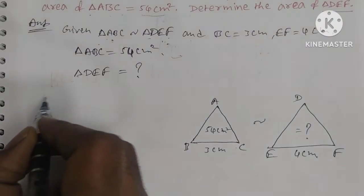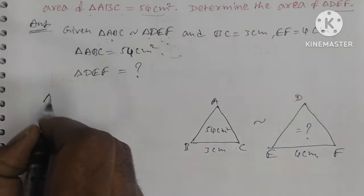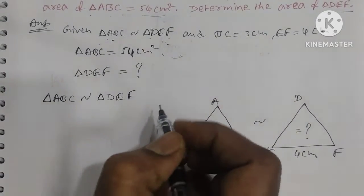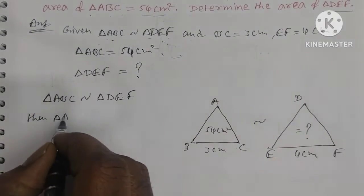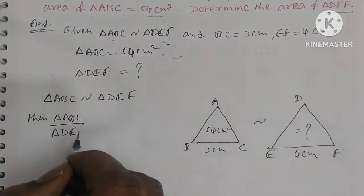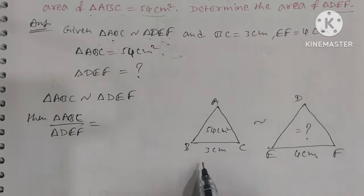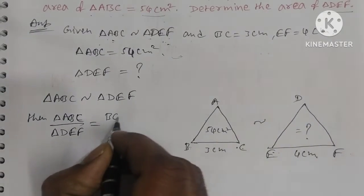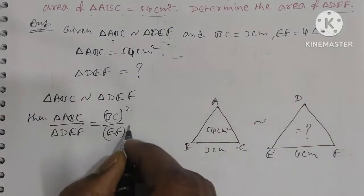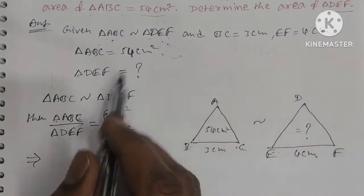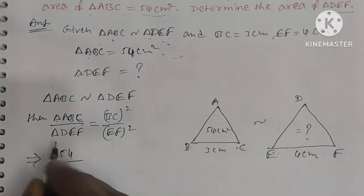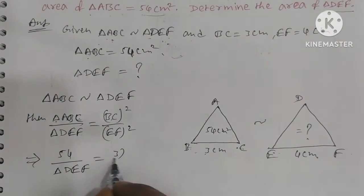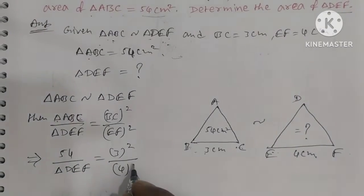BC is the corresponding side to EF. So, area of triangle ABC by area of triangle DEF is equal to BC² by EF². That is BC² by EF², where BC = 3 and EF = 4.